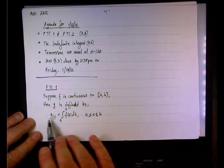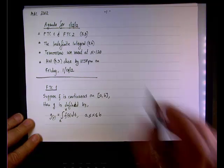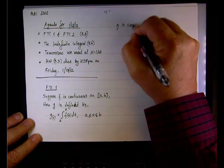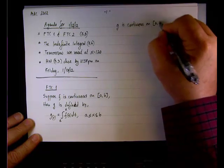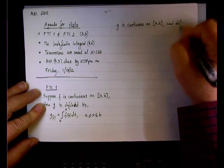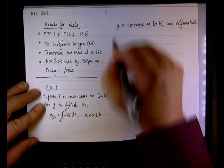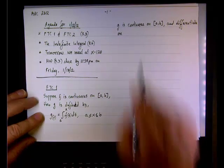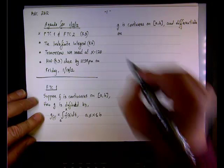So we define the function g by letting the integral go from a to x, and the comments that we have here, we're going to say that g by itself is continuous on the same interval and differentiable. If you remember the definition of differentiability, in other words, the derivative exists.